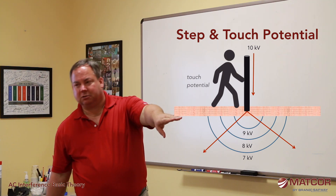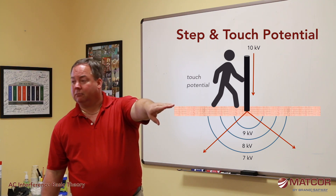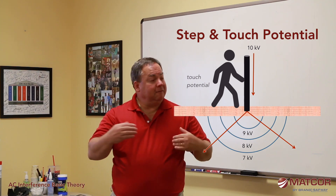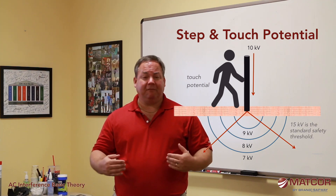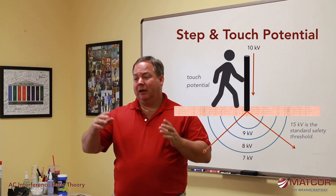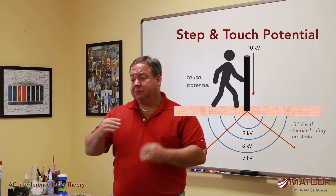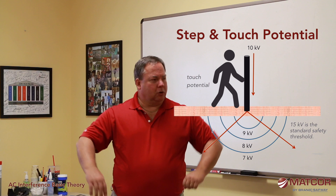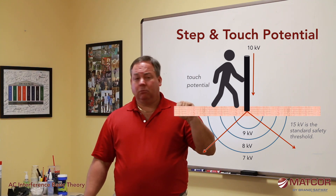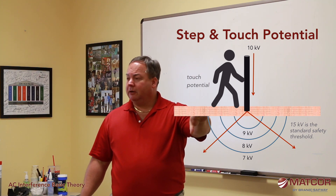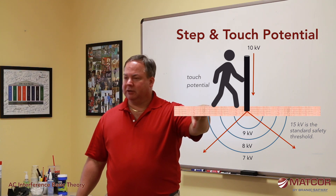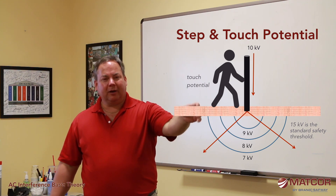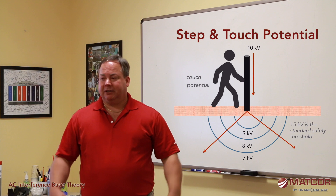Touch potential is easiest to visualize — you're touching something that has a lot of voltage. Your foot is touching the earth, current flows from your hand, down through your heart, to the earth — not necessarily a good thing. The 15 volts pipeline standard for safety purposes has been around for a long time. It's based on the average size of a man and his resistance to earth, and the range at which you could touch something electrified and not be able to let go — because there's a point at which the electricity stops your muscles from being able to release, and you can have heart palpitations and die.